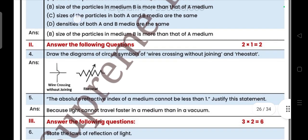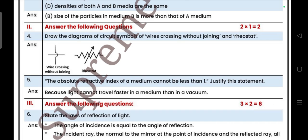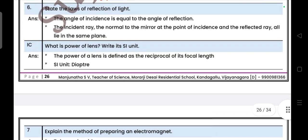Next, two mark questions. Two questions, each carries one mark. Draw the diagram of circuit symbol of wires crossing without joining and rheostat. This is the symbol. Then, the absolute refractive index of a medium cannot be less than one. Justify this statement. Because light cannot travel faster in a medium than in vacuum.